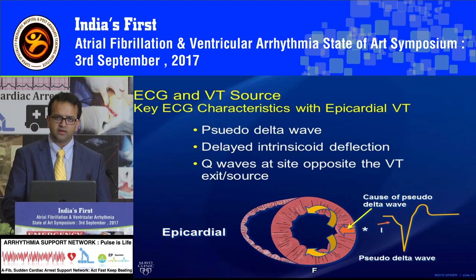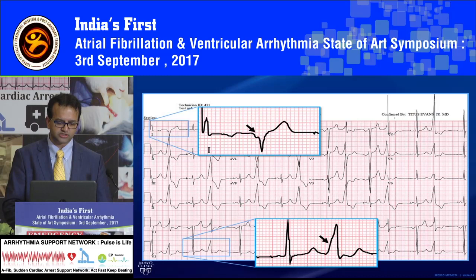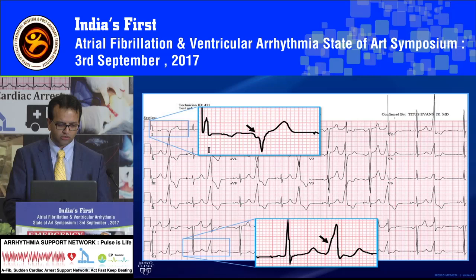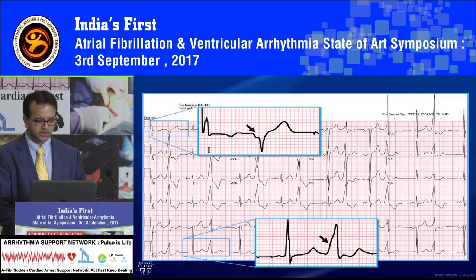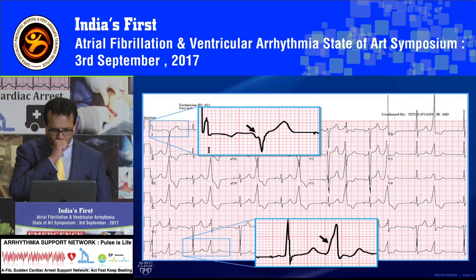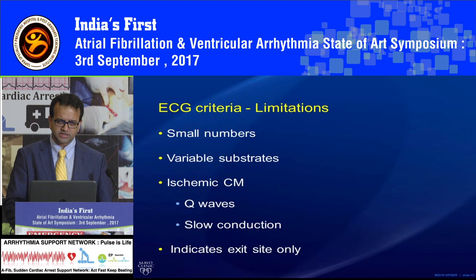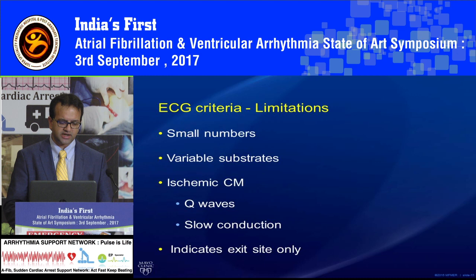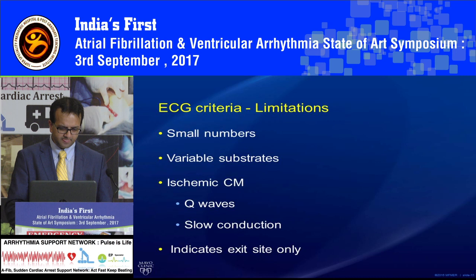The same principle applies in settings of inferior or anterior wall MI. With a transmural infarct, ventricular tachycardia typically shows a Q wave because there is no endocardial activation, and you get a QS pattern from that region. In the EKG shown here, there is slurring in the downslope and upslope of the QRS, which may help distinguish epicardial from endocardial origin. There are many ECG criteria for this, some specific and some non-specific, but ECG criteria only explain the exit site because V1 through V6 are all unipolar leads.